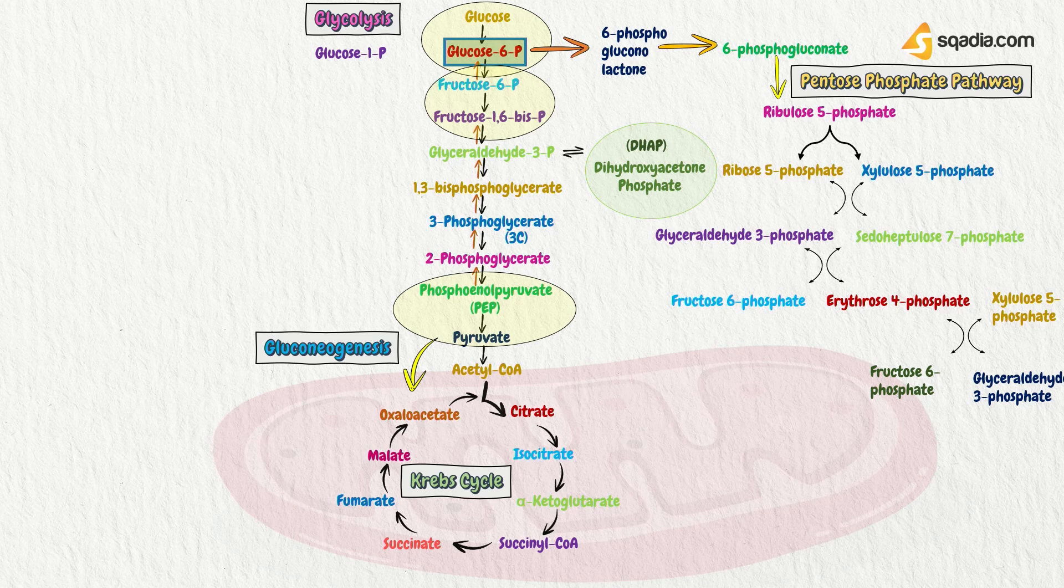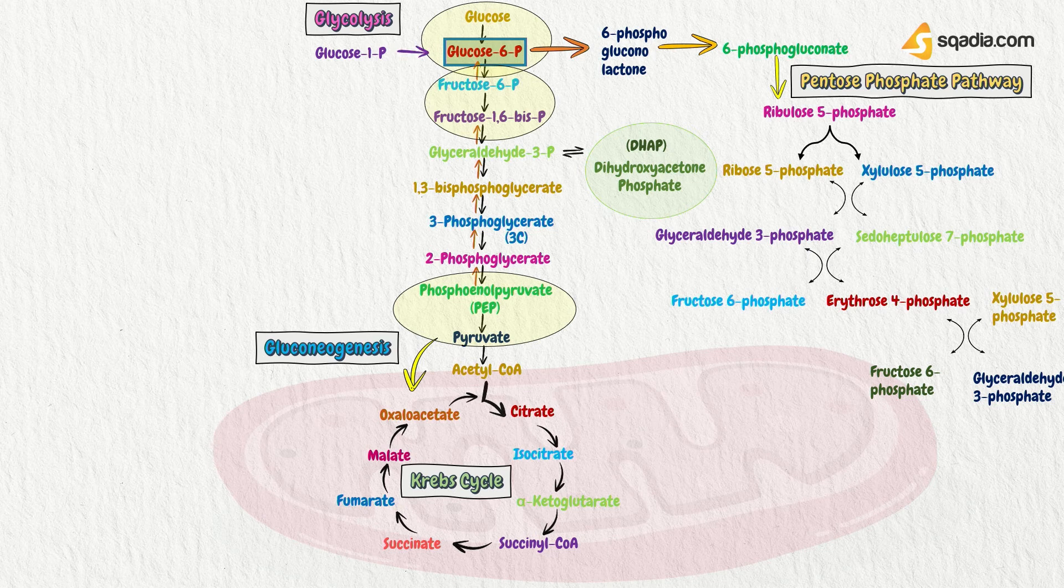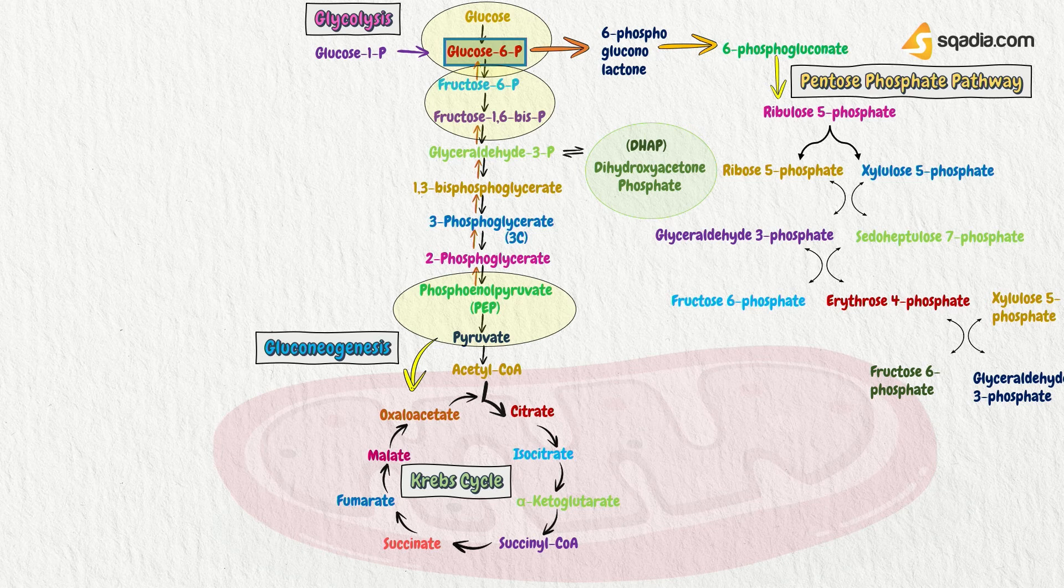So, you see, these pathways are interconnected with each other. So now, this glucose 6-phosphate is interconvertible into glucose 1-phosphate. That can also lead to formation of glycogen.